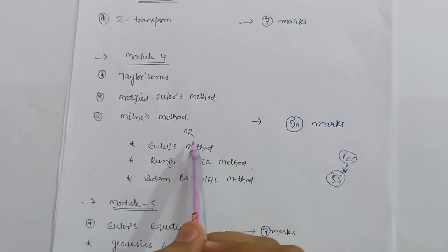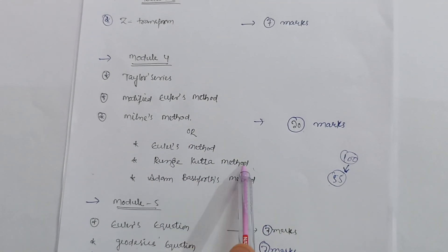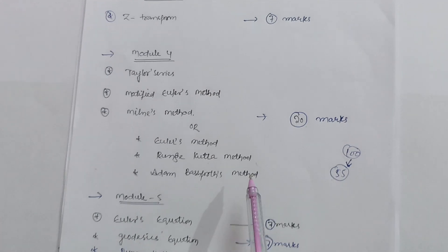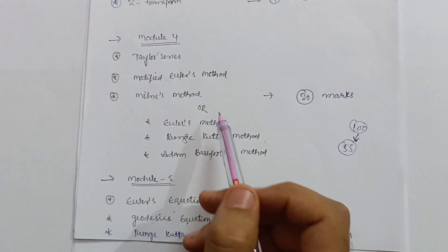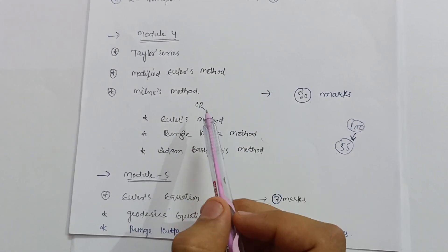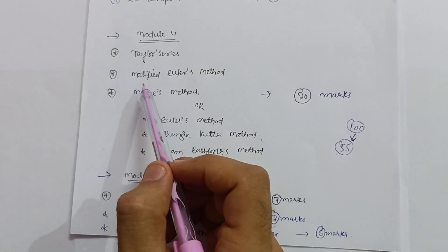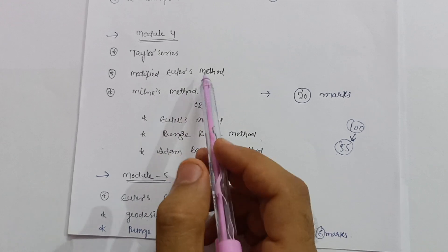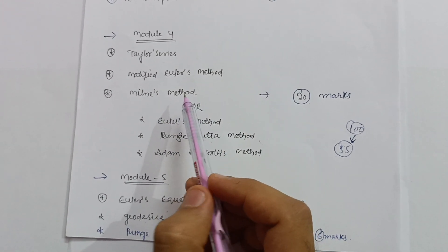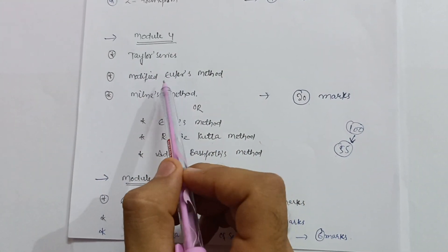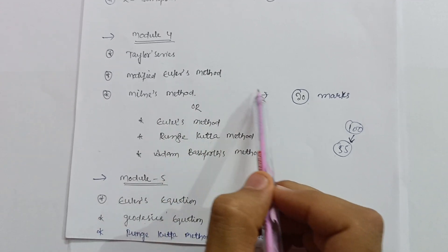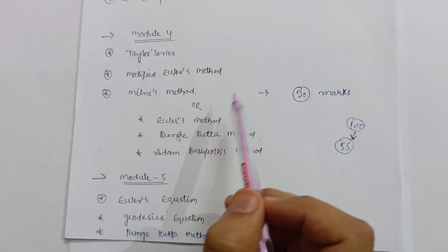So in another part, they will ask you Euler's Method, Runge-Kutta Method, Adam-Bashforth Method. So it is your choice, friends, which you will choose over here. I will prefer you just go through the first part, it is very easy. This part is also easy, but for you people, if you are backlog students, then these three topics you just cover in this module. You can definitely get 20 marks over here.